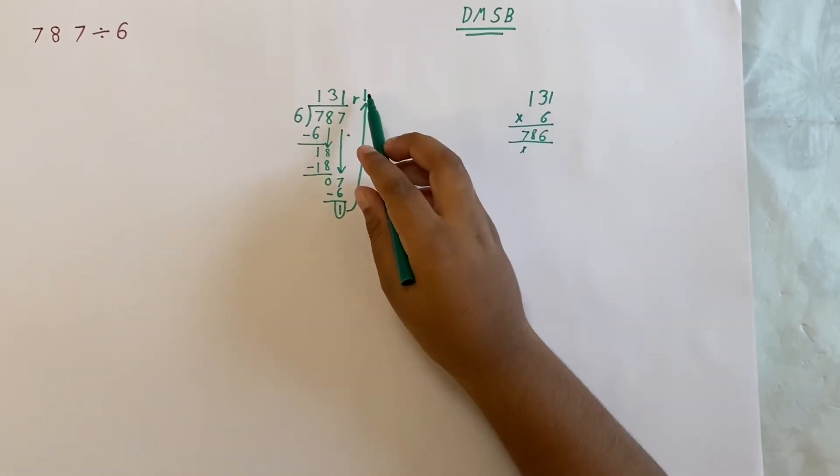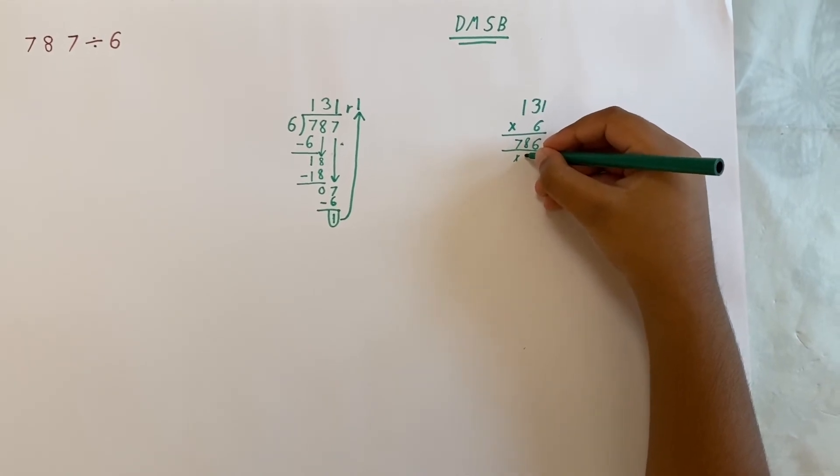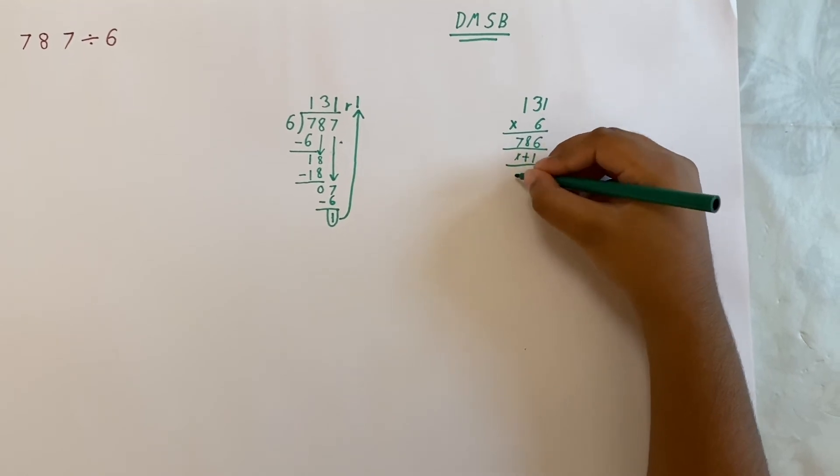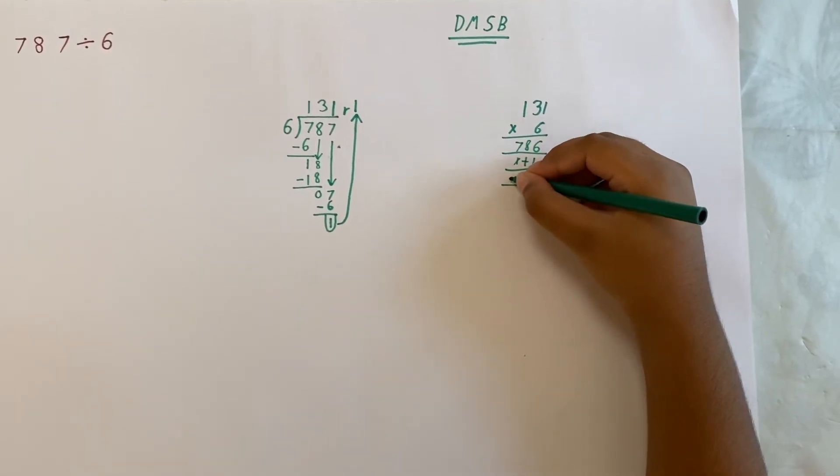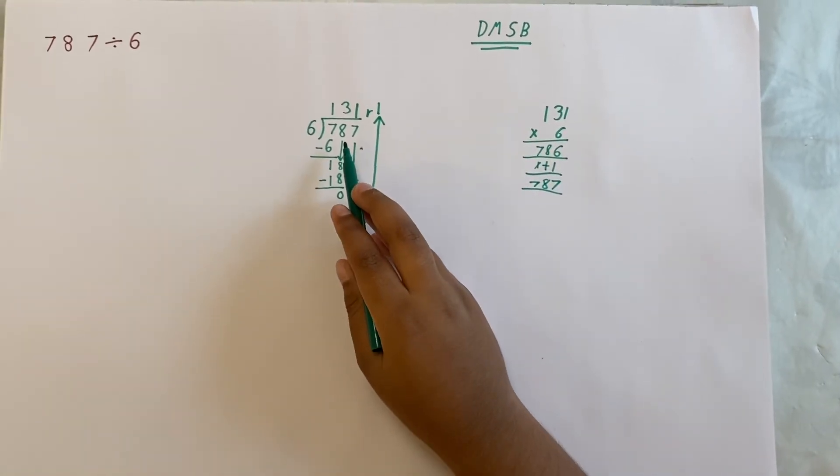But we still have the remainder of 1. We should add the remainder of 1, which gives us an answer of 787, our dividend.